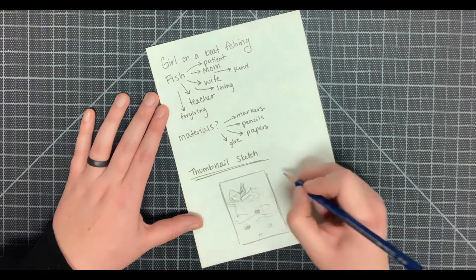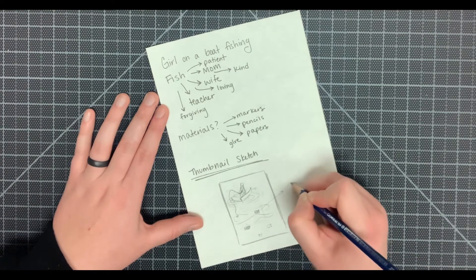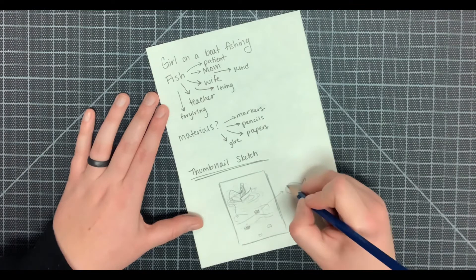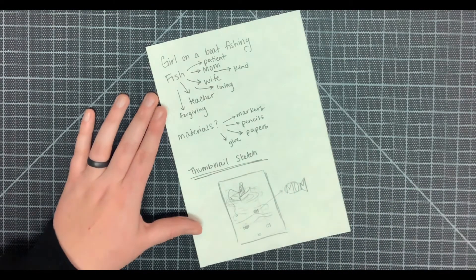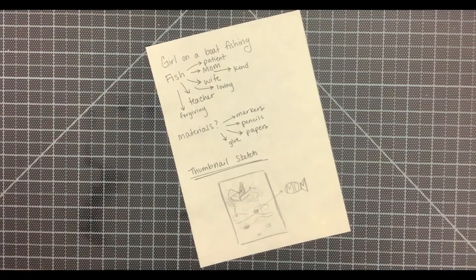Inside the fish, I will be writing the roles and characteristics I fear failing in, like the mom, I fear failing as a wife, a teacher, and then also in those characteristics of patience, loving, and then being forgiving.